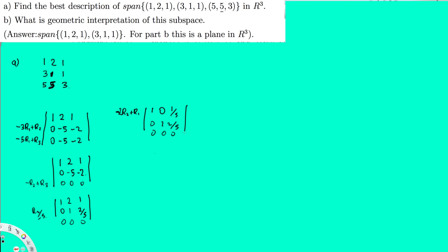From the reduced form, we see that we have two linearly independent vectors and the third is a linear combination of these two. So the best description of the span is the span of the first two vectors: span of 1 2 1 and 3 1 1. That's the answer for part a.